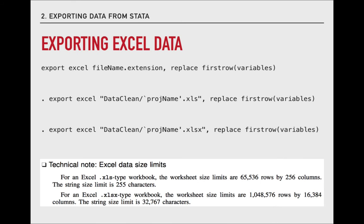There is also an export excel command. That export excel command has a similar replace option. It also has a specific option that indicates we want the variable names stored in the first row, so it's really important to include this option. By default, Stata will export in the .xls file format. If you specify .xlsx as the file extension when you create the file name, it will save in that format. The main difference between these two formats is the number of rows: 65,000 rows versus over a million rows. There is also a difference in the number of columns, though column limits tend to be less of an issue for us than row counts. Keep that in mind as you make decisions.